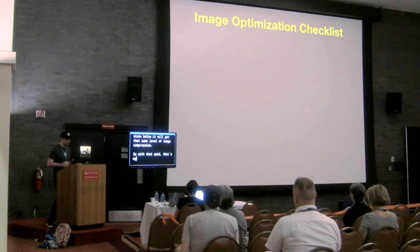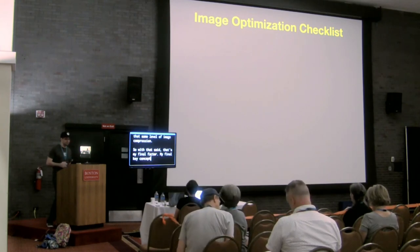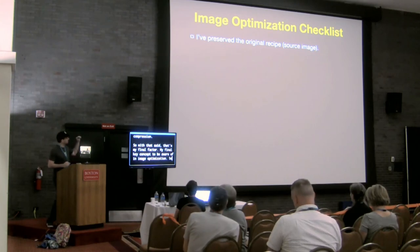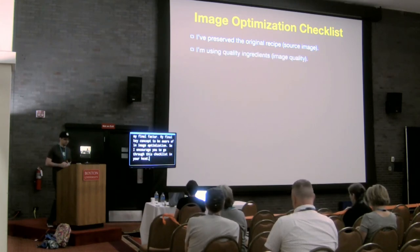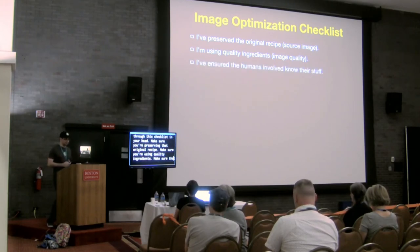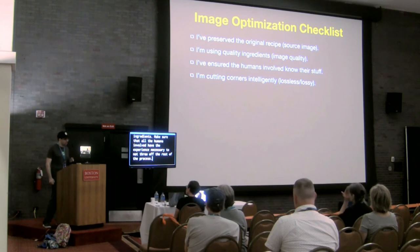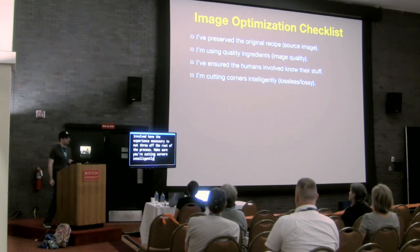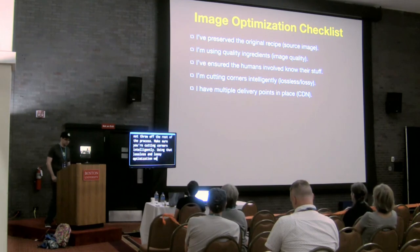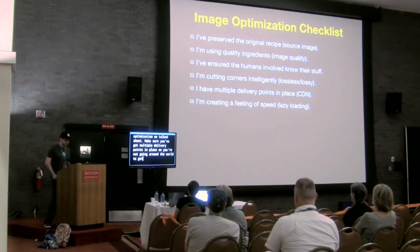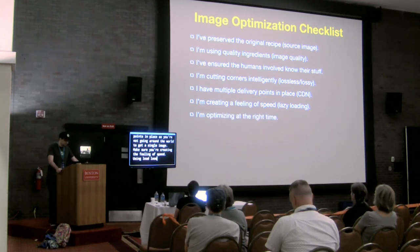That's my final key concept to be aware of in image optimization. I encourage you to go through this checklist: make sure you're preserving that original recipe; make sure you're using quality ingredients; make sure all the humans involved have the experience necessary not to throw off the rest of the process; make sure you're cutting corners intelligently using lossless and lossy optimization; make sure you've got multiple delivery points in place so you're not going around the world to get a single image; make sure you're creating a feeling of speed using lazy loading; and make sure you're optimizing at the right time — after upload, not before.